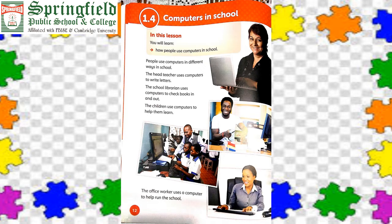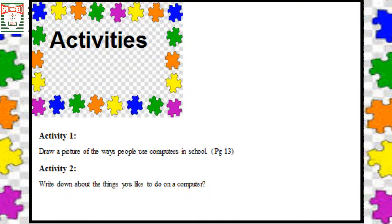Now students, you have to complete activity number one: draw a picture of the ways people use computers in school, on page number 13. And activity number two: write down about the things you like to do on a computer.